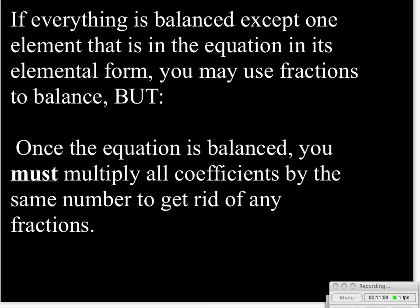Now the last thing is, and this is another thing you want to put in your notes. If everything is balanced except for one element that's in the equation in its elemental form, so it's just sitting there, so oftentimes this will be oxygen, you'll have everything in your equation all balanced except for the oxygen, and you can't quite get it to balance. You are allowed to use fractions to get it to balance, and usually it'll be some half-type fraction. But once you get the equation balanced, you must go back and multiply all the coefficients by the same number, usually 2, in order to get rid of any fractions. And so once we get it balanced, we're going to multiply everything by the same number to get it to whole numbers, kind of like what we did with empirical formulas.